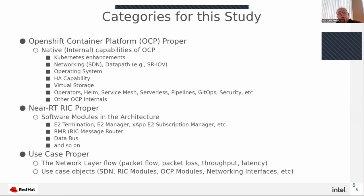Looking at the different categories for the study, the first being OCP or OpenShift Container Platform proper, we'll look at how the building blocks can be applied to the native internal capabilities of OCP — specifically what is important from a performance perspective, a resource consumption perspective, and a networking perspective — and apply the building blocks where applicable.